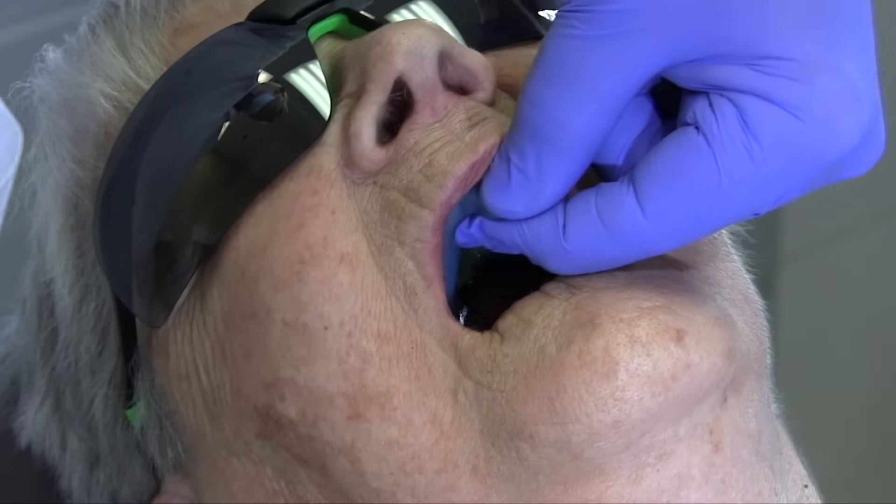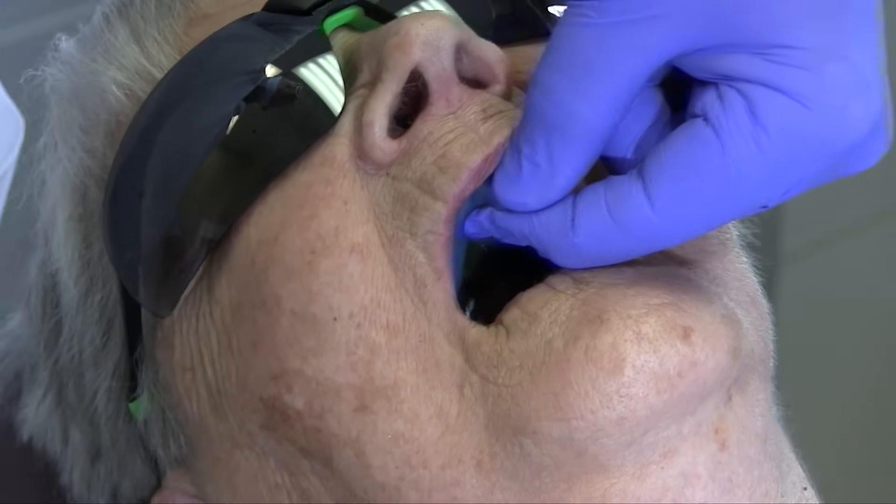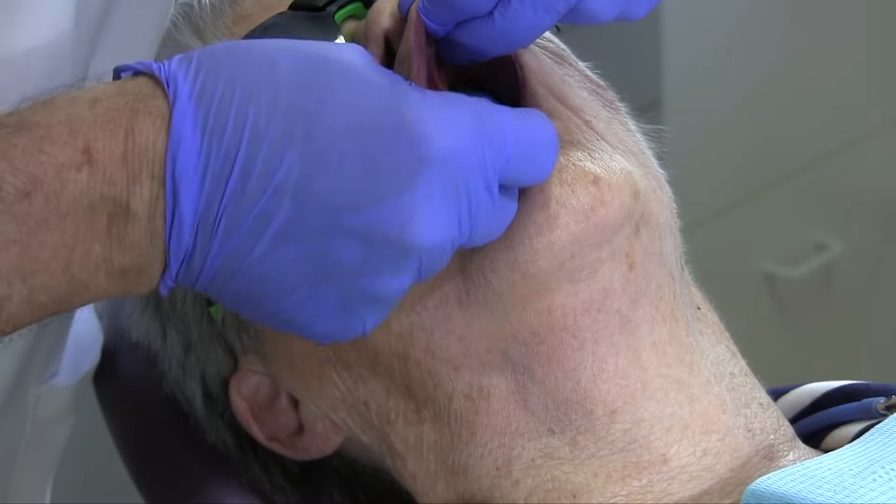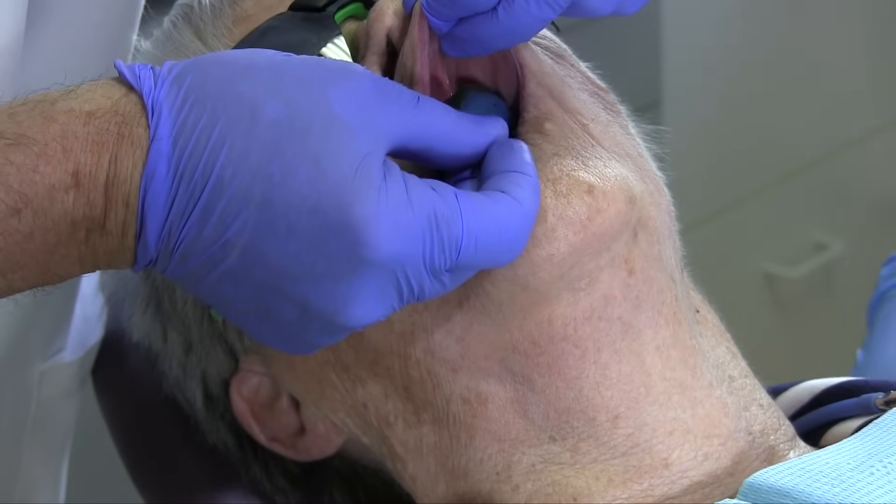When the maxillary tray is fully molded, it should have sufficient peripheral seal to resist removal from the seated position. If it does not, visually inspect and correct the peripheries.